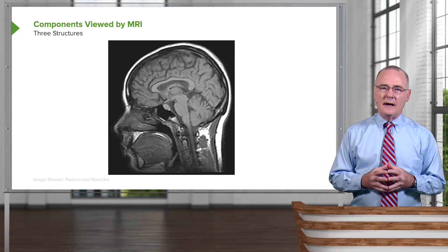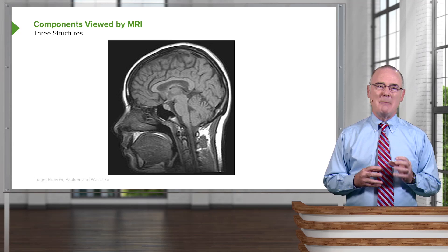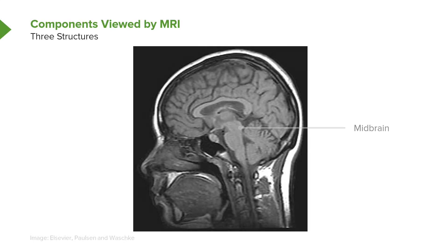In medical practice, anatomy is seen through imaging studies. Brain imaging routinely utilizes magnetic resonance imaging due to its high quality resolution. The three structures of the brainstem can clearly be seen in this sagittal MRI section — here is the midbrain, then this prominent expanded structure is the pons, and right below that is the medulla oblongata, with the spinal cord extending inferiorly into the vertebral column.